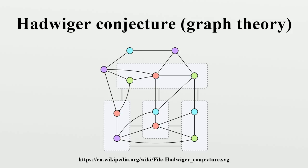Special cases and partial results: The case where K equals 2 is trivial. A graph requires more than one color if and only if it has an edge, and that edge is itself a K_2 minor. The case K equals 3 is also easy. The graphs requiring three colors are the non-bipartite graphs, and every non-bipartite graph has an odd cycle, which can be contracted to a 3-cycle, that is, a K_3 minor.